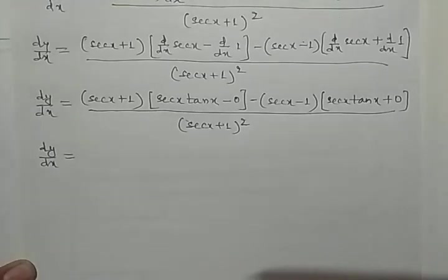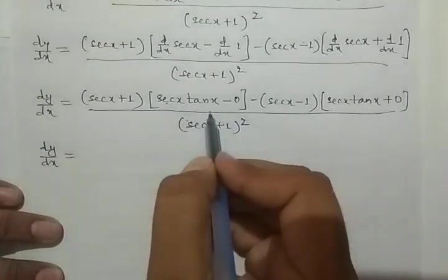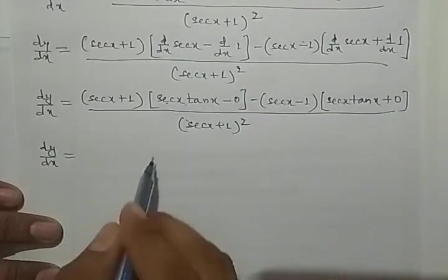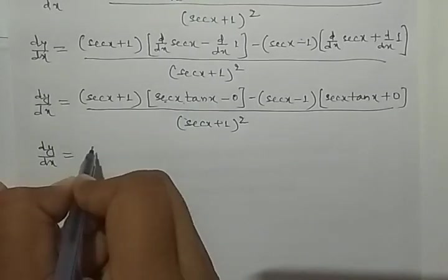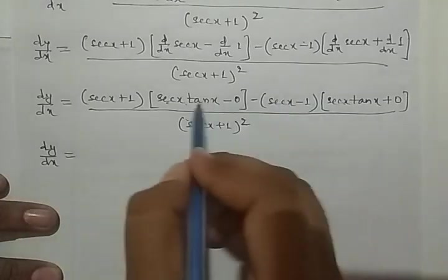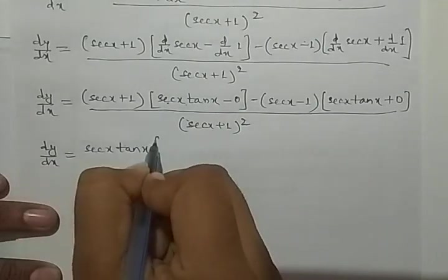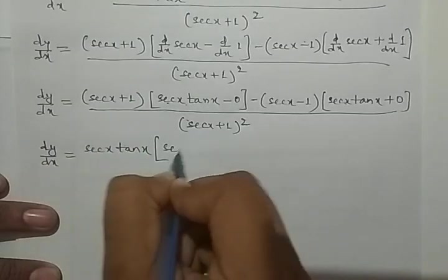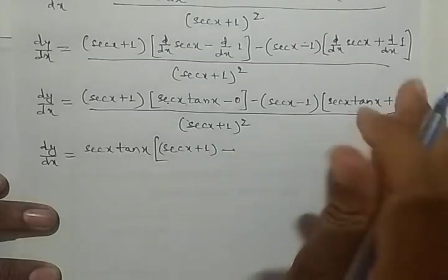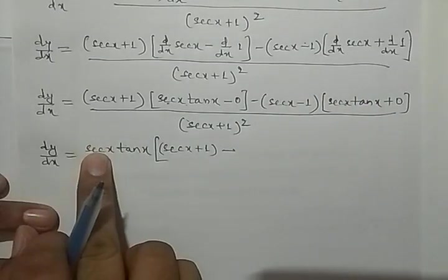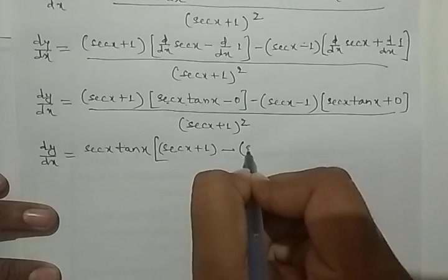Now we can take sec x tan x as common. So sec x tan x is common, giving us (sec x + 1) minus (sec x - 1) in the bracket. The sec x terms cancel, leaving only 1 + 1 equals 2.